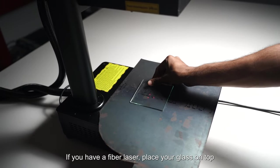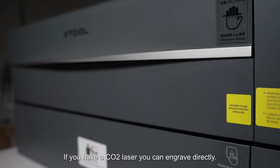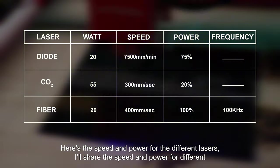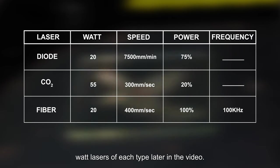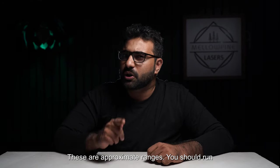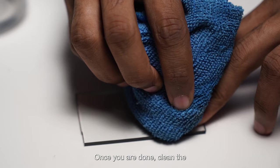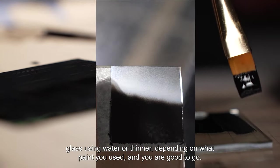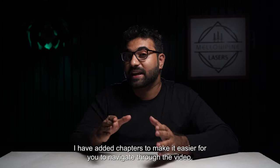If you have a fiber laser, place your glass on top of a metal plate and engrave it. If you have a CO2 laser, you can engrave directly. Here's the speed and power for the different lasers. I'll share the speed and power for different watt lasers of each type later in the video. These are approximate ranges - you should run a power scale test to get the best settings for your laser. Once you are done, clean the glass using water or thinner depending on what paint you used and you're good to go.